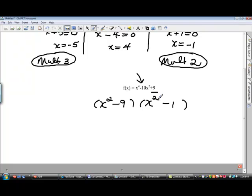Now, each of these factors can be factored one more time. Each of these is a difference of squares. x squared minus 9 can be factored into x plus 3 times x minus 3, and x squared minus 1 can be factored into x plus 1 times x minus 1.